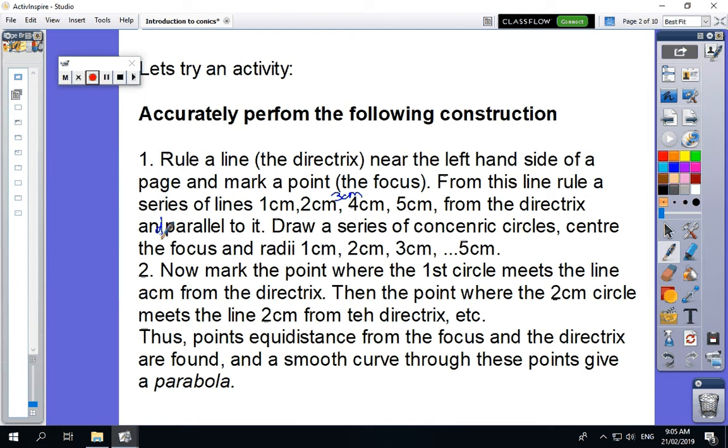Draw a series of concentric circles centered at the focus with radii one centimeter, two centimeter and so on. So once you've done that, you mark the point where the first circle meets the line, say one centimeter from the directrix, then the point where the two centimeter circle meets the line and so on. Thus the points equidistant from the focus and the directrix are found, and a smooth curve through these points gives a parabola. So pause the video and have a go.